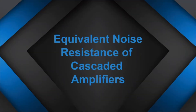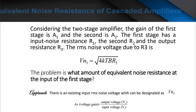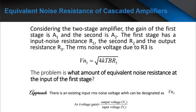Hello everyone, today we're going to talk about the equivalent noise resistance of cascaded amplifiers. Considering the two-stage amplifier, the gain of the first stage is A1 and the second is A2. The first stage has an input noise resistance R1, the second R2, and the output resistance R3.